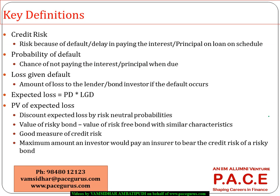Whenever I talk about the word credit risk, the major thing I am trying to derive is any borrower resulting in either a default or delay. Both of them come under credit risk — any kind of default or delay in making a timely payment of interest and principal, whatever they have borrowed, based on the initially agreed-upon schedule. If I am feeling there may be a delay or a default, it means I am exposed to risk.